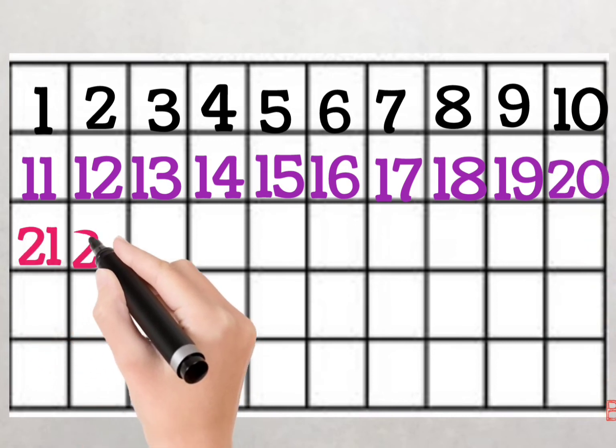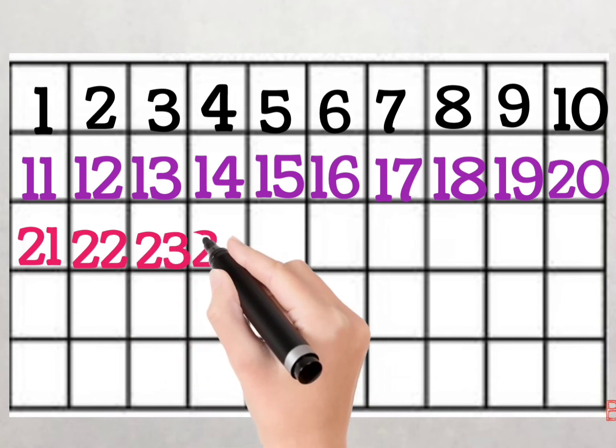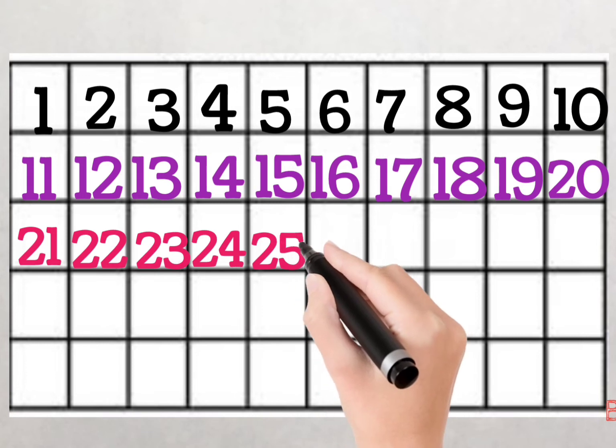2, 1, 21. 2, 2, 22. 2, 3, 23. 2, 4, 24. 25, 25.